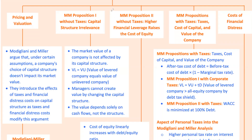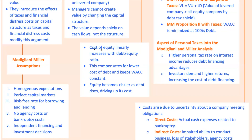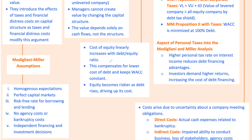MM Proposition 2 without taxes states that as a company increases its use of debt, the cost of equity rises because debt holders have a prior claim on assets, making equity riskier. However, the overall WACC remains constant in a no-tax world. Think of it like this: if Apple decided to take on more debt, its shareholders would demand a higher return to compensate for the increased risk, pushing up the cost of equity.